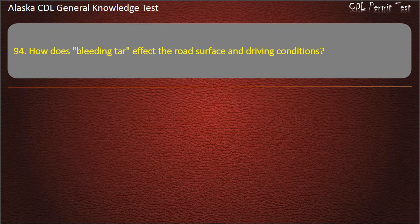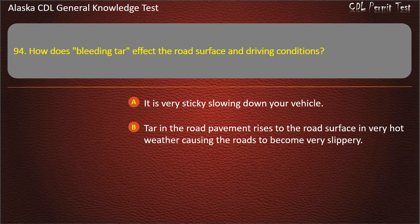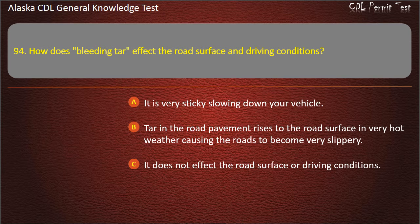Question 94. How does bleeding tar affect the road surface and driving conditions? It is very sticky, slowing down your vehicle; tar in the road pavement rises to the surface in very hot weather causing roads to become very slippery; or it does not affect road surface or driving conditions. Answer: Tar rises to the road surface in very hot weather causing roads to become very slippery.